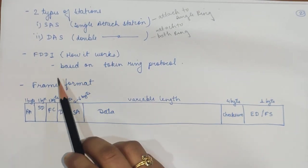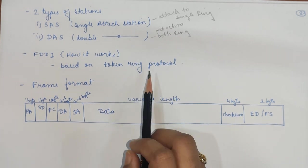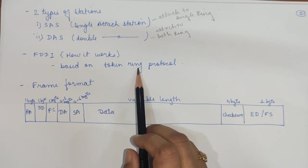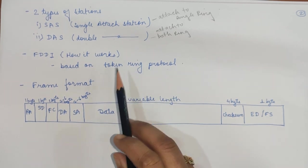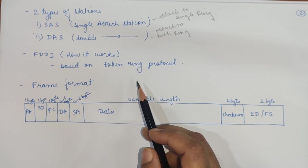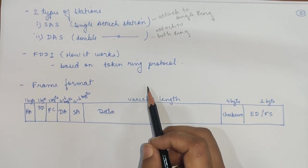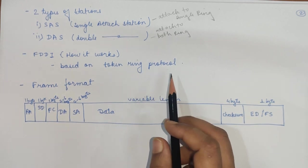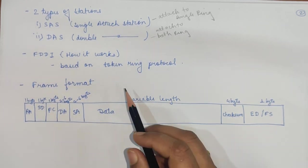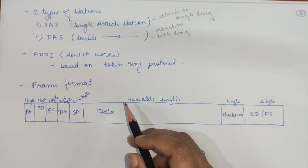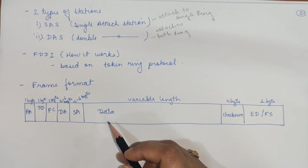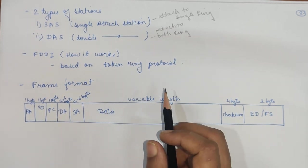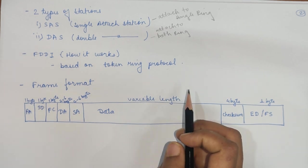FDDI works using a token ring protocol. The first ring is used for data transmission and the second for backup. When a station wants to send data, it holds the token, inserts all the information, and the token rotates in the ring. The destination address accepts that token or frame, copies the message, empties the frame, and the empty token continues rotating in the ring.